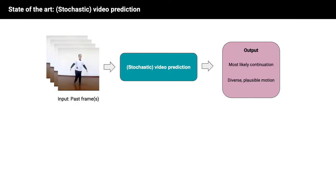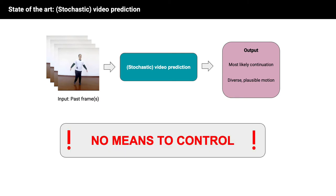So far, video prediction models synthesize future videos given one or more past frames and either focus on predicting the most likely continuation or on generating arbitrary diverse but plausible motion. What they lack is means to precisely control the motion of the depicted objects, and that's what we are interested in.